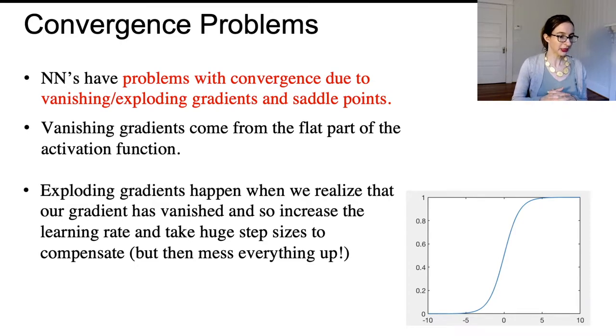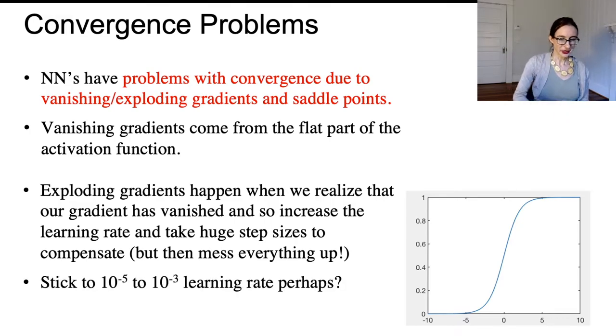Exploding gradients happen when we realize that our gradient has vanished and so we increase the learning rate to take these huge step sizes and then we're all over the search space, and it messes everything up and then we have trouble getting down to a good local minimum. There's some guidance here on the search learning rate, but take it with a grain of salt.